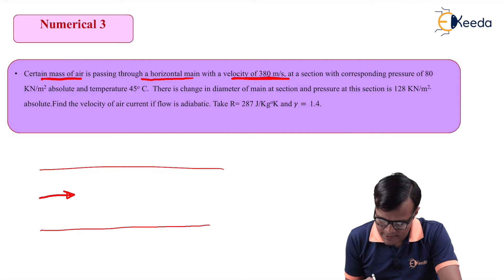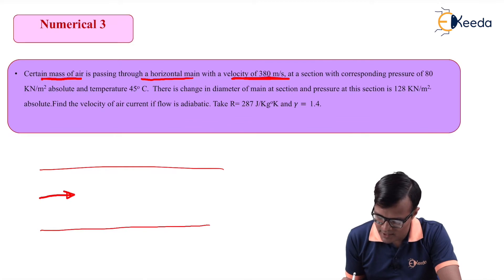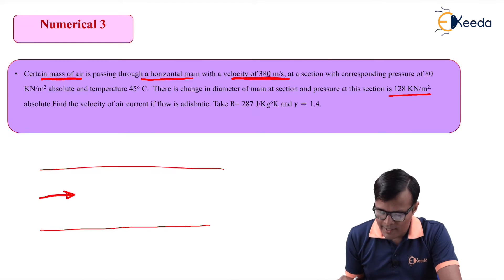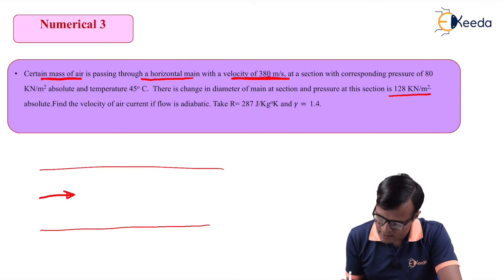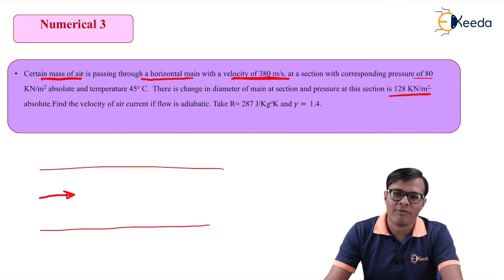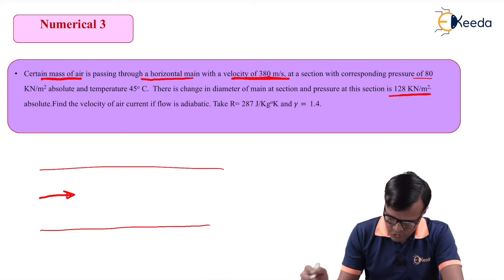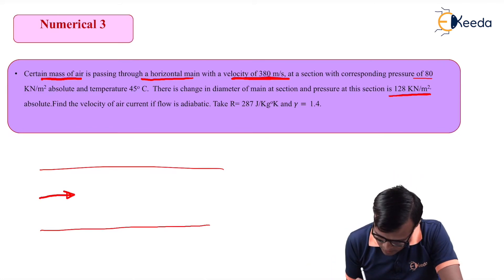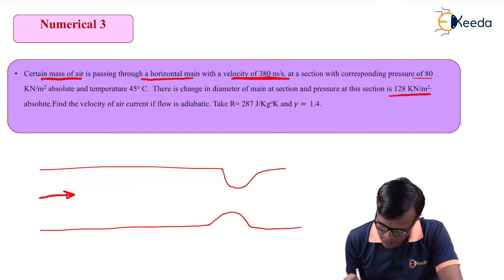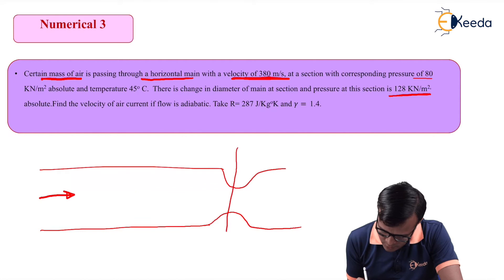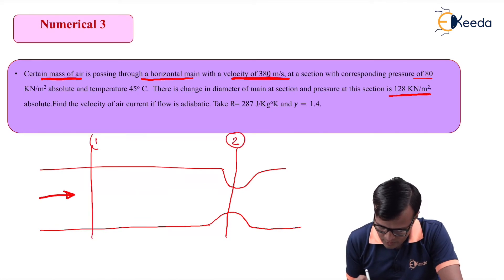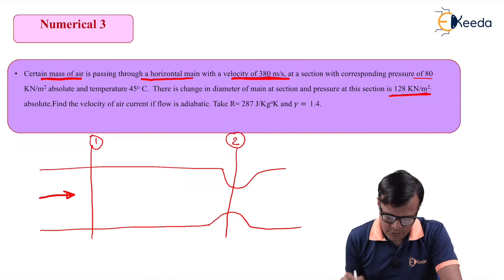There is a change in diameter of the main at a section, and the pressure at section 2 is 128 kilonewton per meter square. Since the pressure increases from 80 to 128, the change in diameter is towards a reduction. At section 2, the pressure is given as 128 kilonewton per meter square absolute, and we need to find the velocity of air.